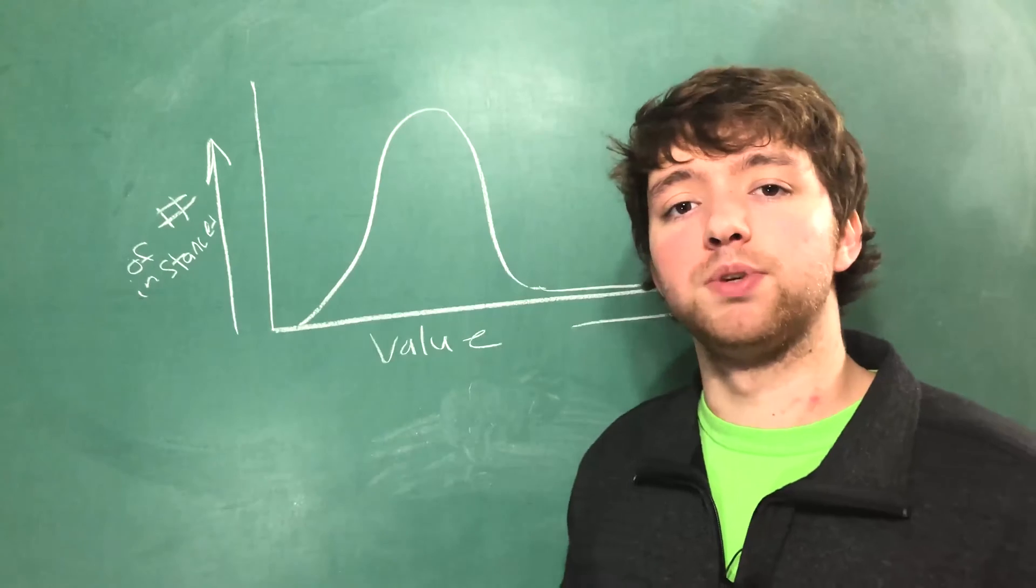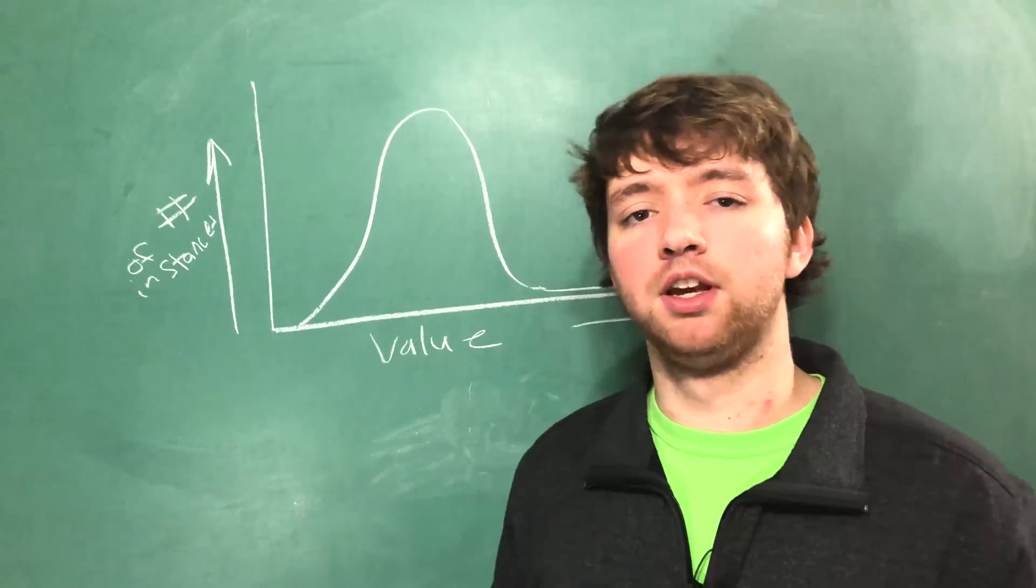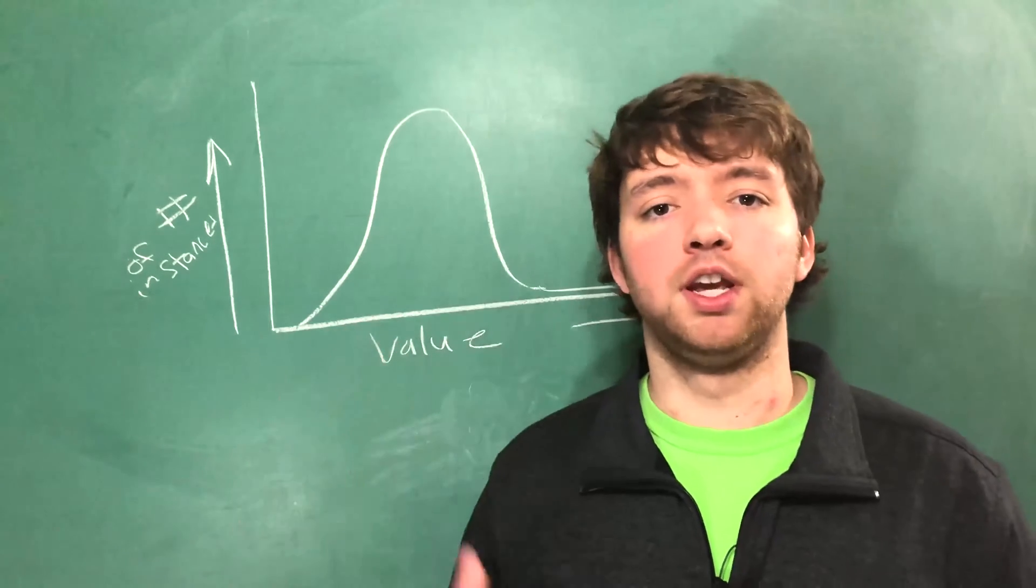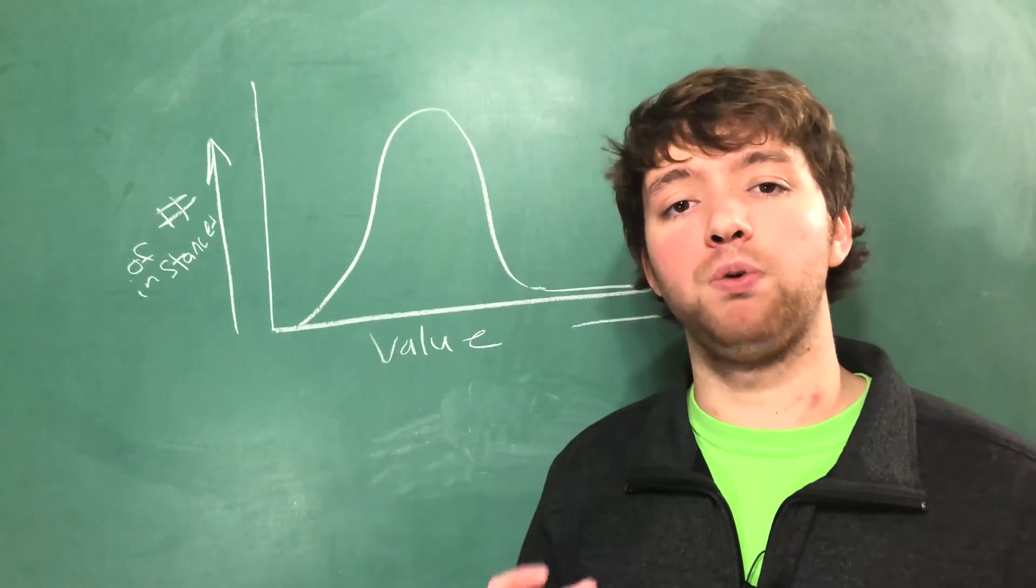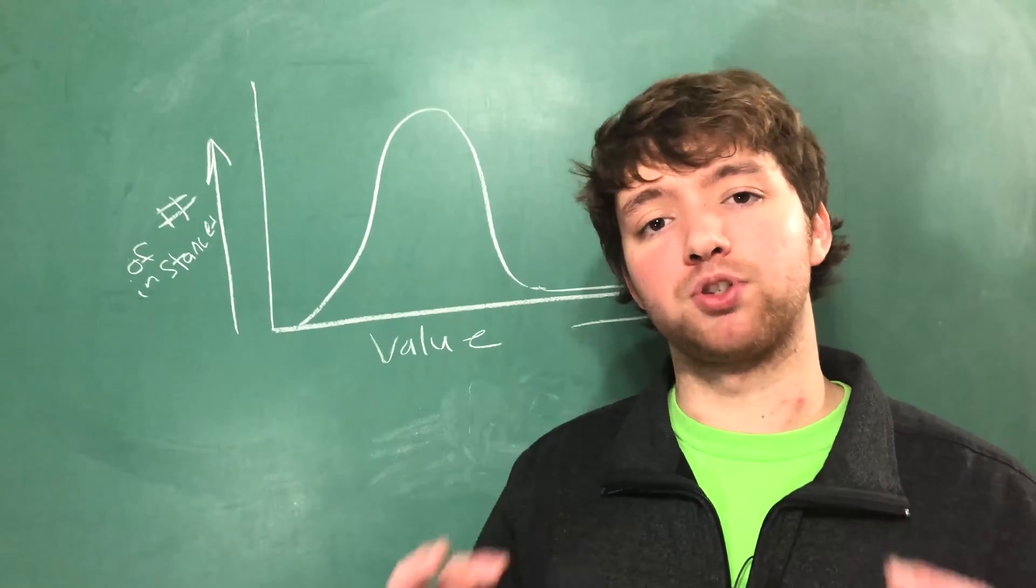So those are the two things to be aware of with outliers. One is they mess up our central tendency and two they mess up our data visualization. In the next video I'm going to be talking about how we address these outliers through a process called a clamp transformation.